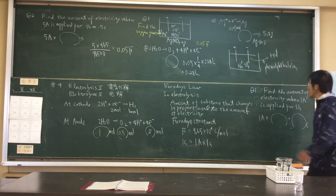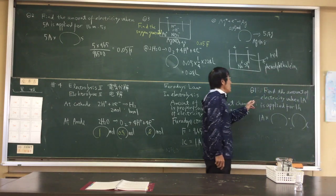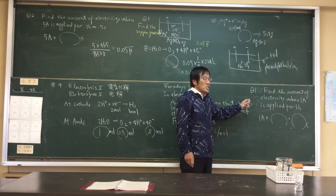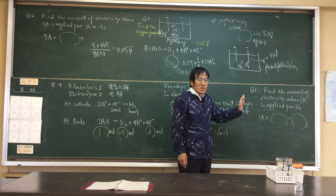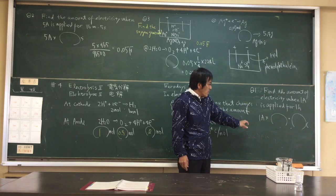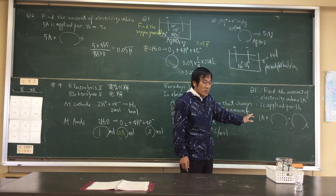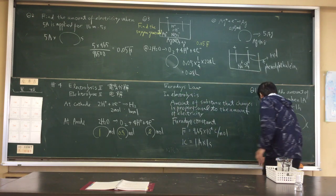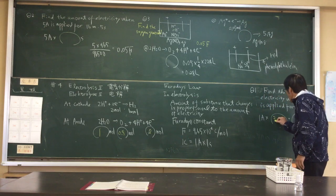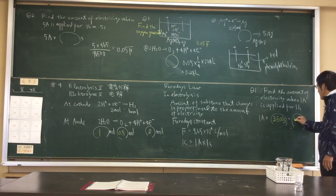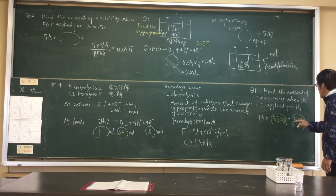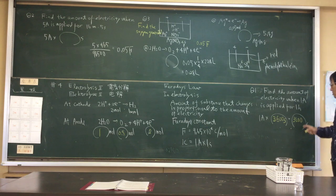Question. Find the amount of electricity when power ampere is applied for one hour. One hour of course, 3,600 seconds.